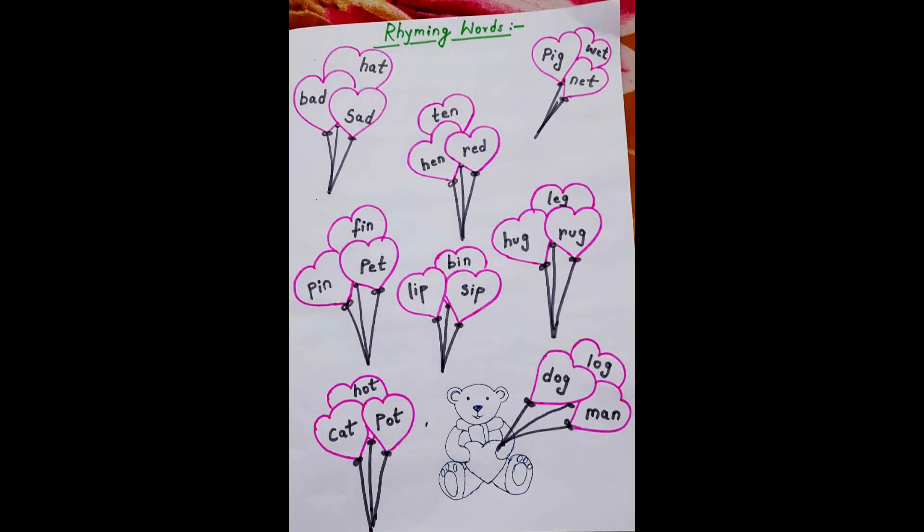The next worksheet is a rhyming worksheet where I have given so many rhyming words. The child has to read the words in each set of balloons and color two balloons of every set that are rhyming together. For example, in the first balloons you can see I have written bad, sad, hat, so the kid has to identify bad and sad is a rhyming word, so they will color both of them in the same color.